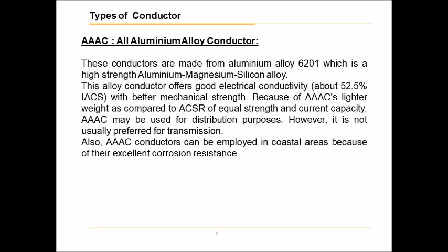AAAC — all-aluminium alloy conductor. These conductors are made from aluminium alloy 6201, which is a high-strength aluminium-magnesium-silicon alloy. This alloy conductor offers good electrical conductivity, about 52.5% IACS, with better mechanical strength. Because of AAAC's lighter weight compared to ACSR of equal strength and current capacity, AAAC may be used for distribution purposes.